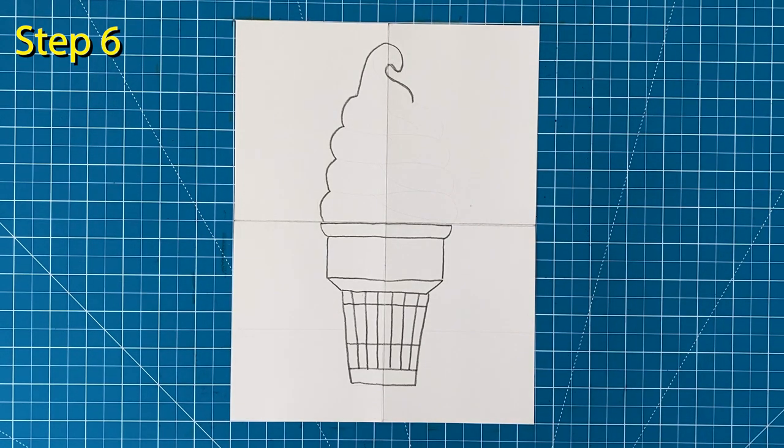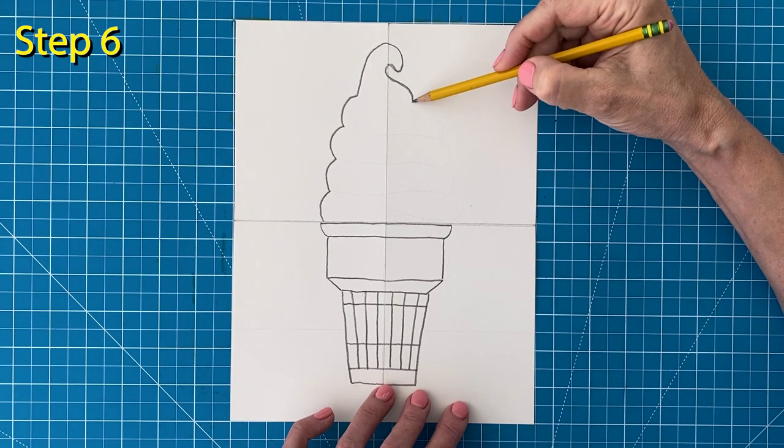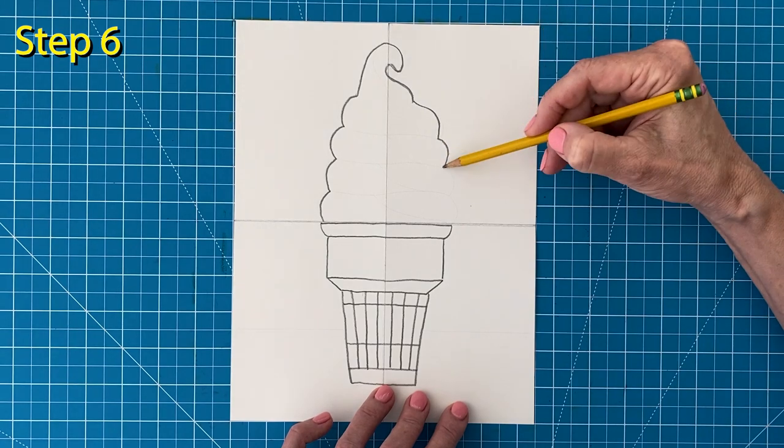Step number six. Draw the right side going down with the same number of bumps as on the left side.